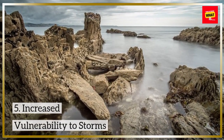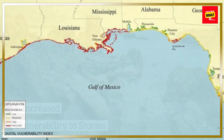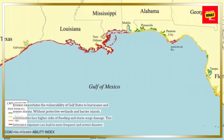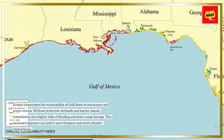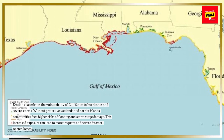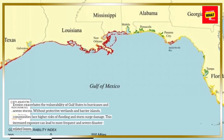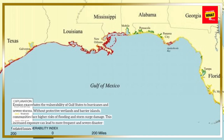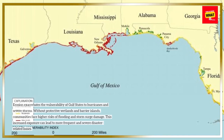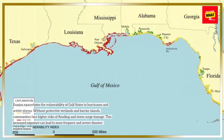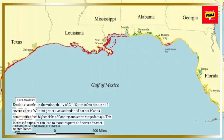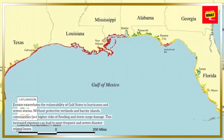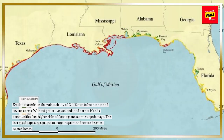Erosion exacerbates the vulnerability of Gulf states to hurricanes and severe storms. Without protective wetlands and barrier islands, communities face higher risks of flooding and storm surge damage. This increased exposure can lead to more frequent and severe disaster-related losses.